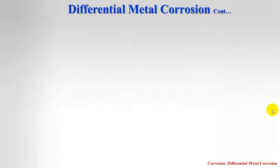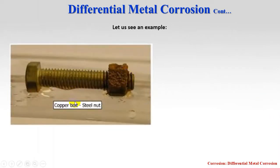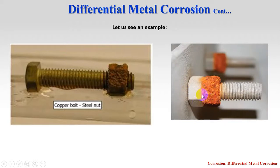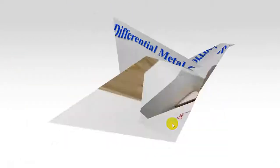Let us see some live examples. Here, copper and a steel nut are in contact — copper acts as the cathode and the steel nut acts as the anode, so it is corroded due to differential metal corrosion. In another example, the net is corroded rapidly due to differential metal corrosion.